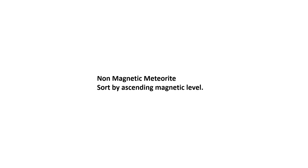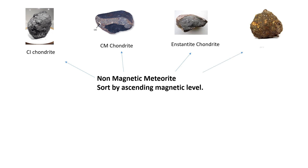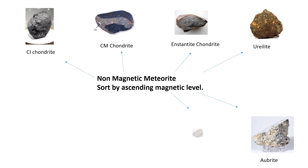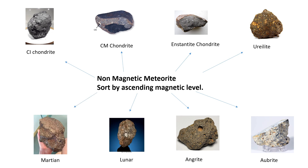Non-magnetic meteorites: Meteorites with no or very weak magnetism are typically those containing little to no free metallic iron or strongly magnetic sulfides. Some groups of meteorites with little to no magnetism include: 1. CI chondrite, 2. CM chondrite, 3. Enstatite chondrites, 4. Ureilite meteorites, 5. Aubrite meteorites, 6. Angrite meteorites, 7. Lunar meteorites, 8. Martian meteorites. In general, non-magnetic meteorites are those rich in silicates without free iron or with high oxidation levels but lacking sulfides and free metals.